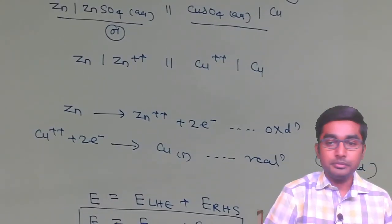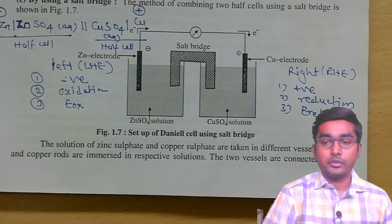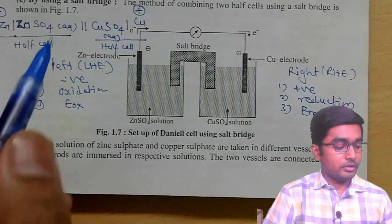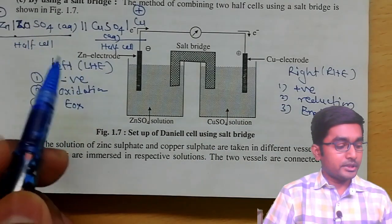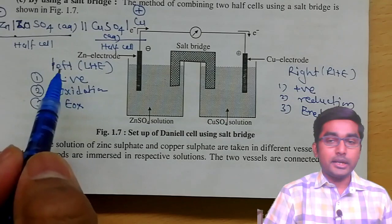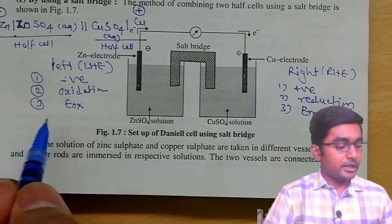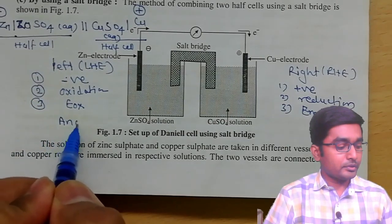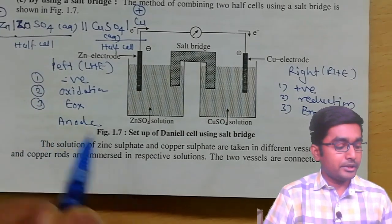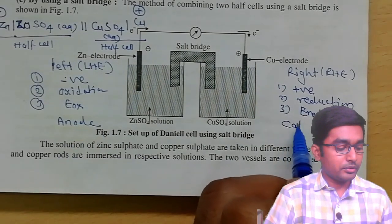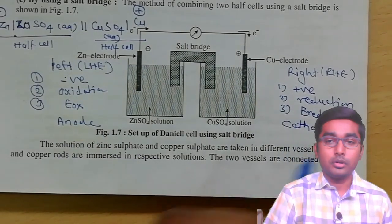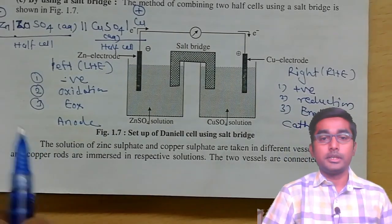One more important convention: the left-hand side electrode is always the anode, and the right-hand side electrode is always the cathode.